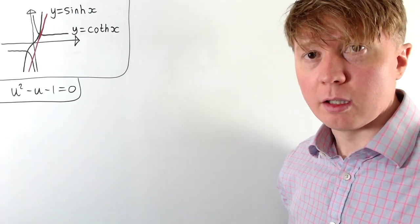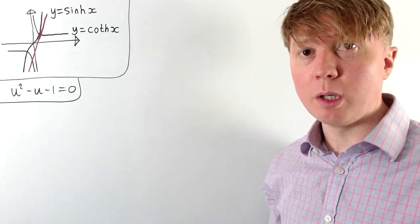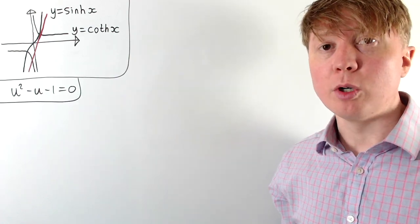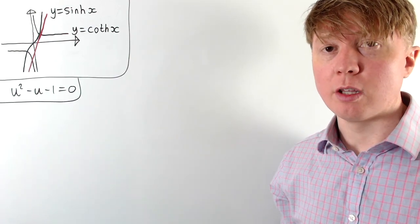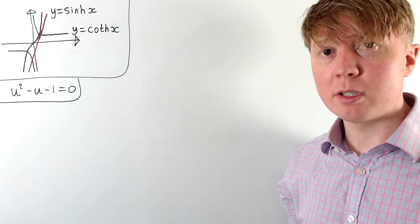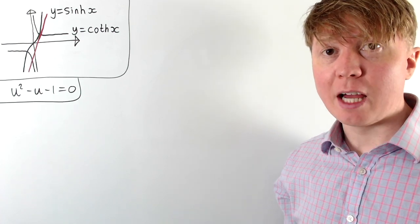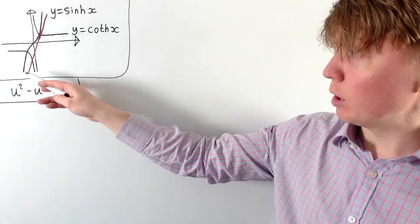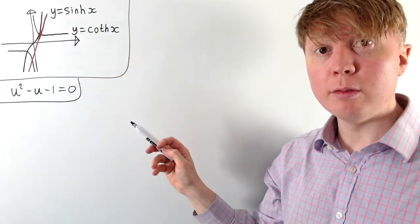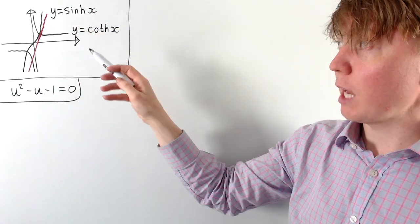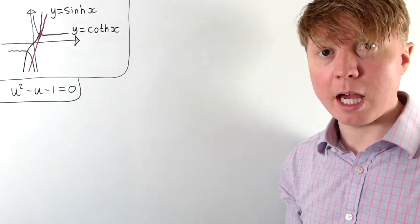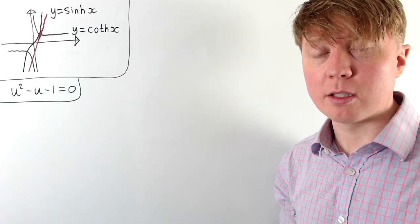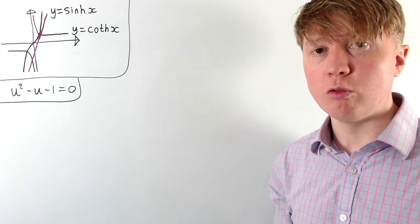We can use this same idea to come up with more examples. Here's a nice one using hyperbolic trig functions: if you have the graph of y equals hyperbolic sine of x and the graph of y equals hyperbolic cot of x, and you find a point where these two intersect, it turns out that the gradient of hyperbolic sine of x at that point is going to be the golden ratio again.